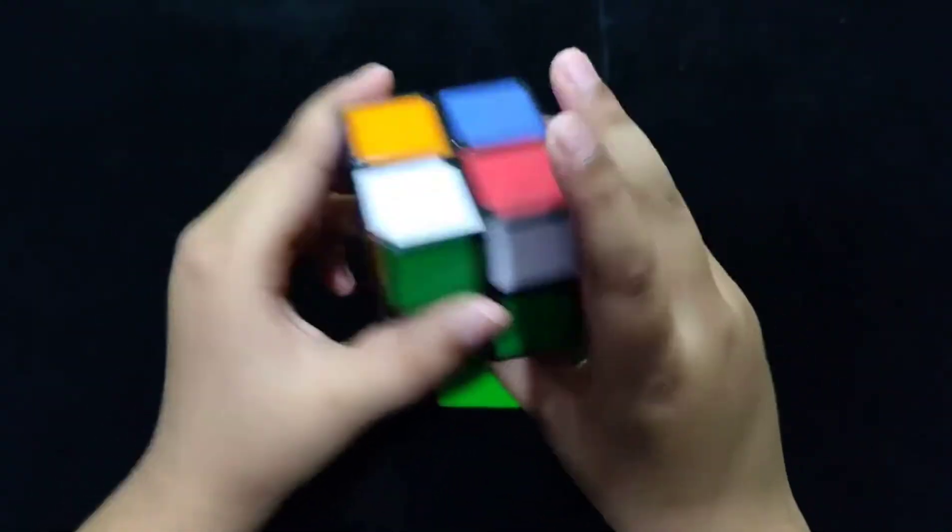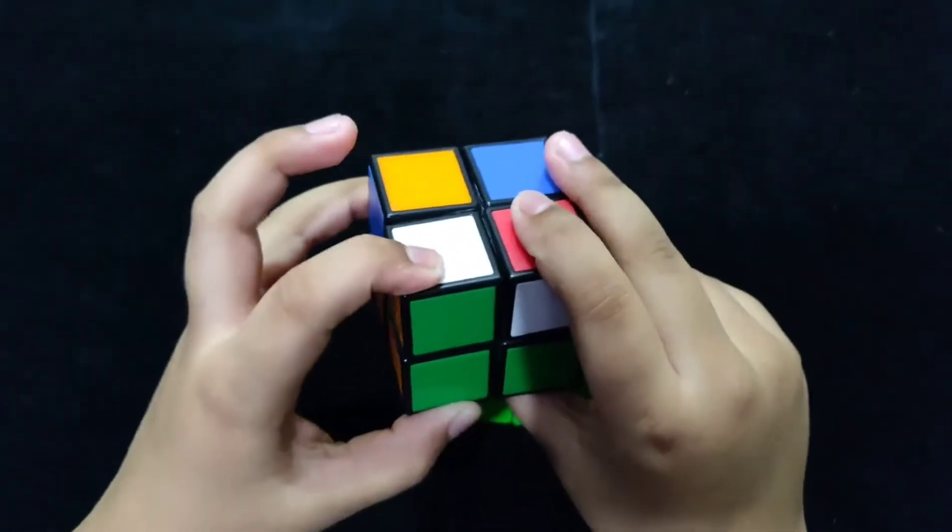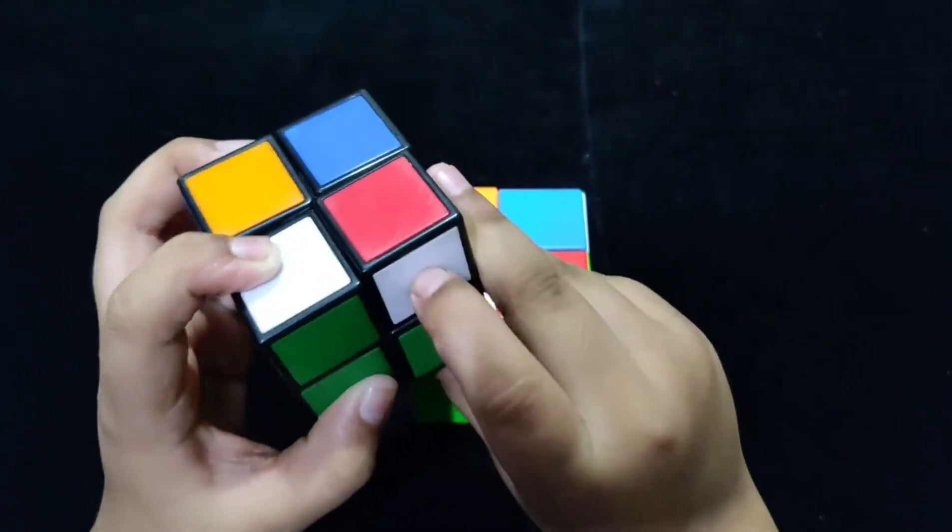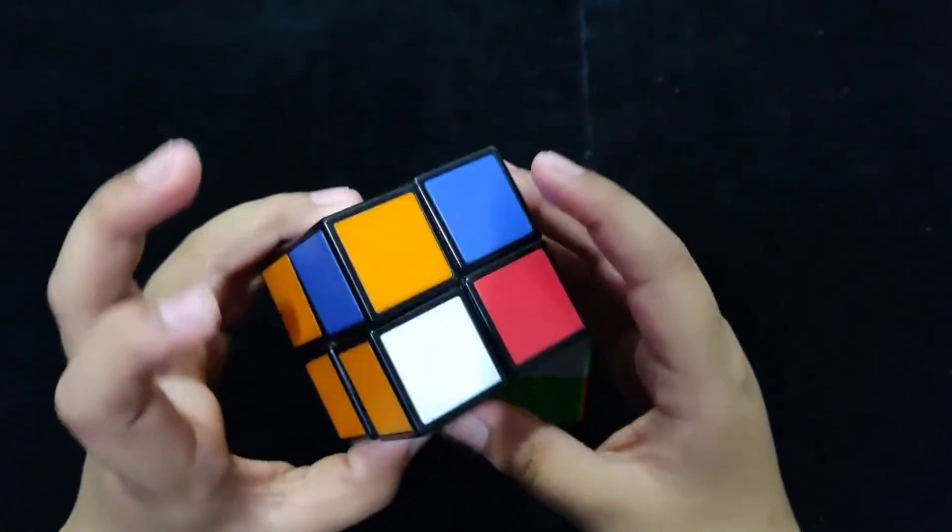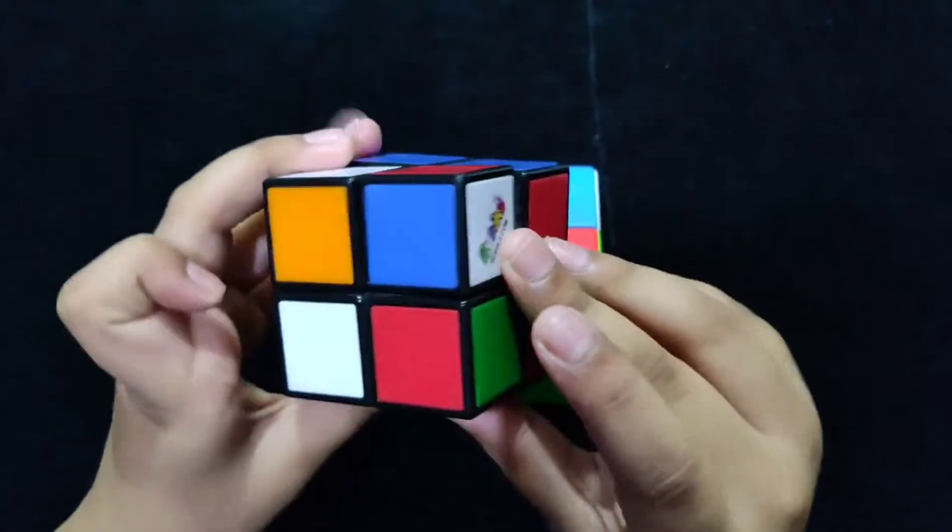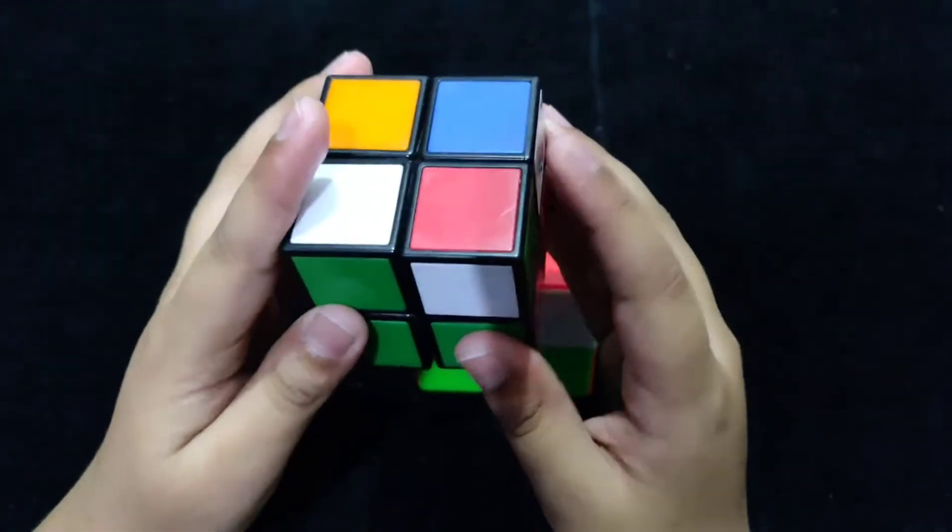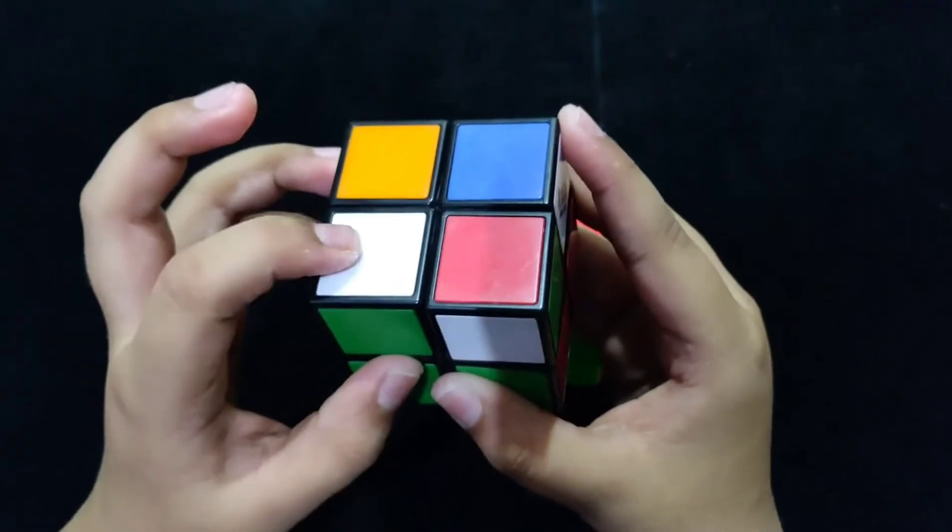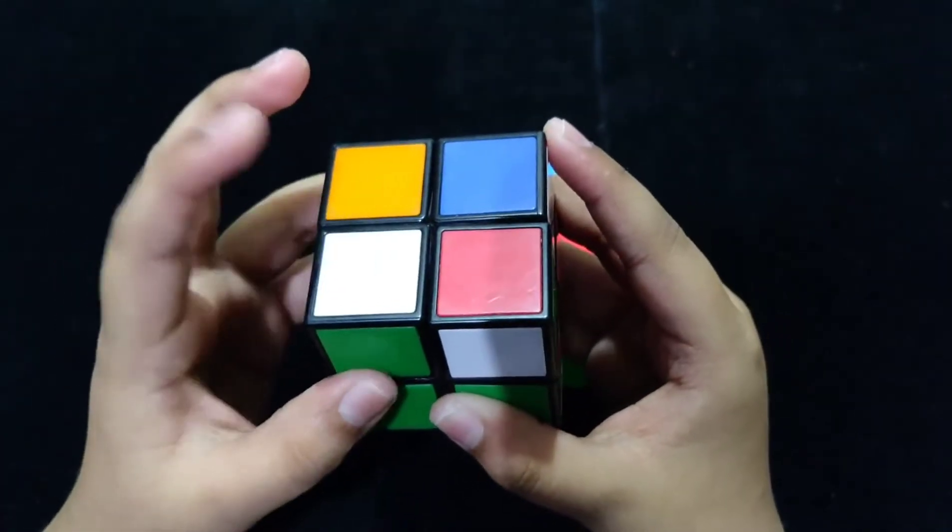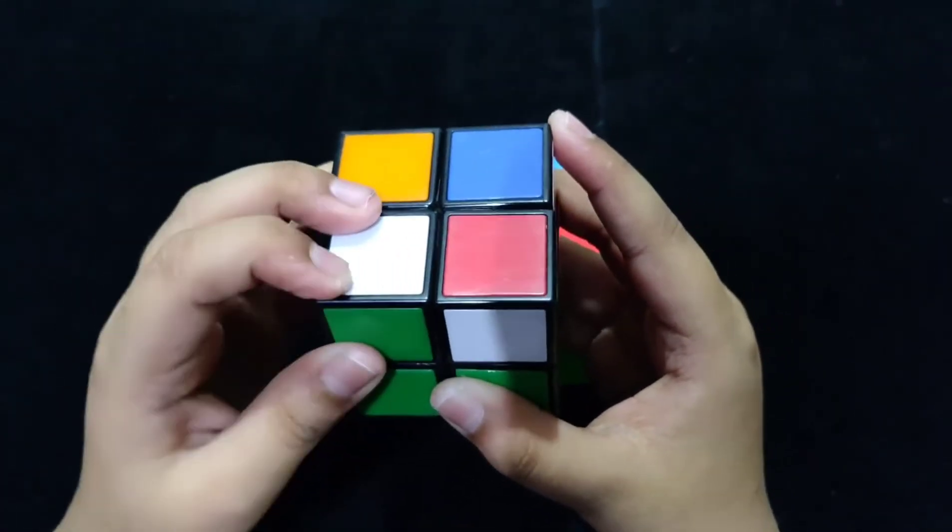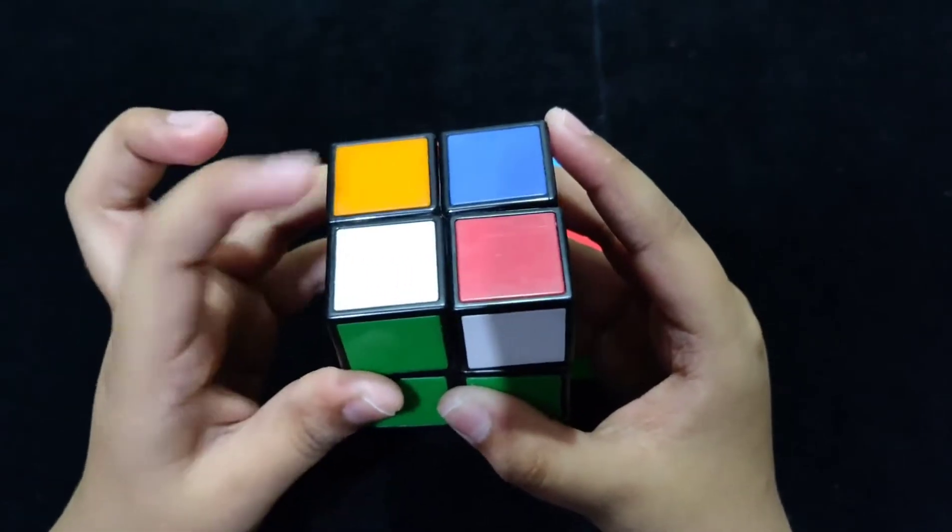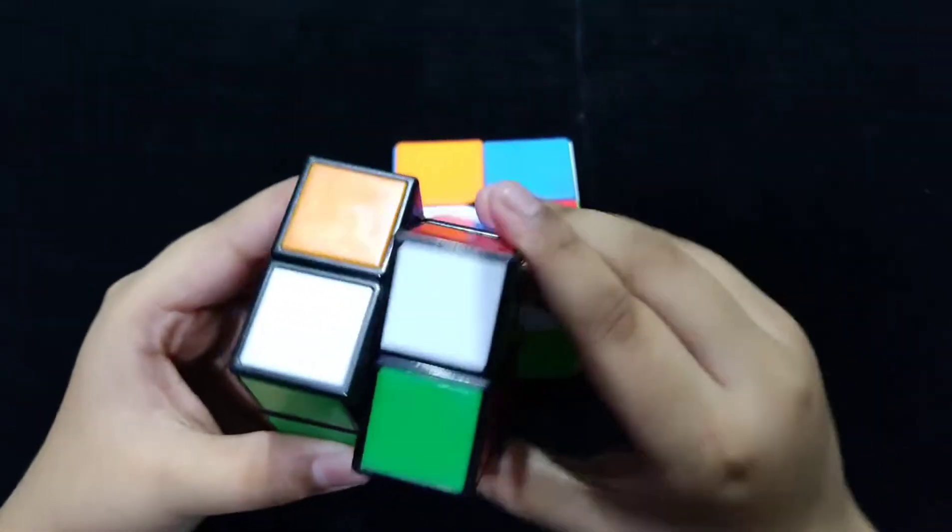The Soon case is a case where you have one corner solved and a corner that is facing towards you and away from you and towards your right. So, for the solution, you need to keep your corner that is facing up towards your left bottom and do the algorithm.